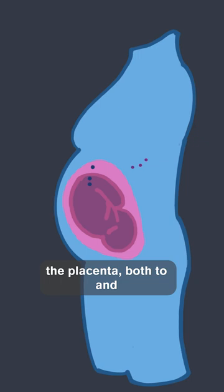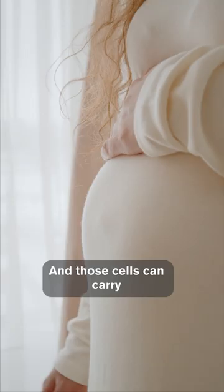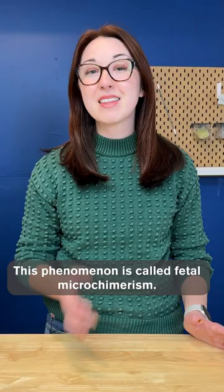During pregnancy, cells can travel across the placenta both to and from the growing fetus. That means if you're pregnant, some of your cells are flowing into your baby's bloodstream and some of theirs are flowing into yours. And those cells can carry your baby's DNA in them.